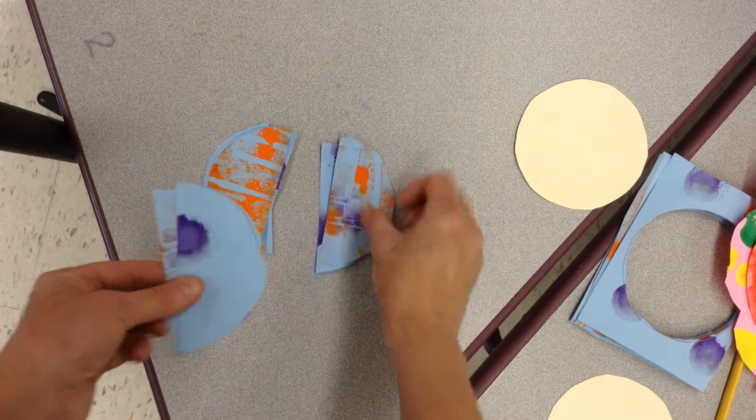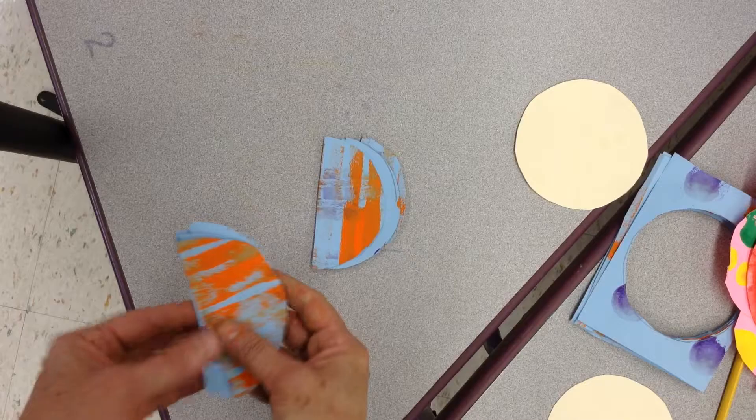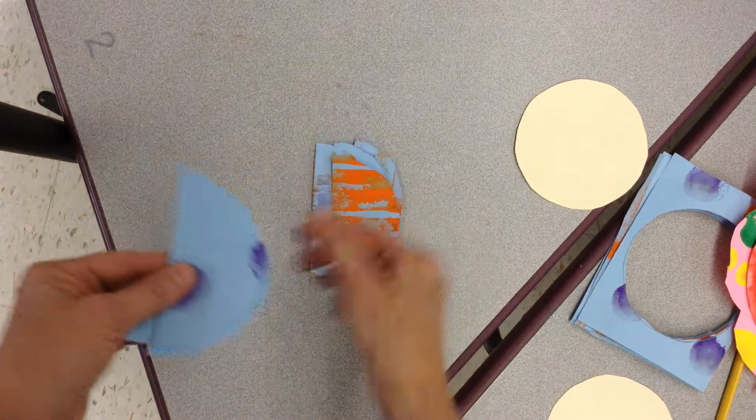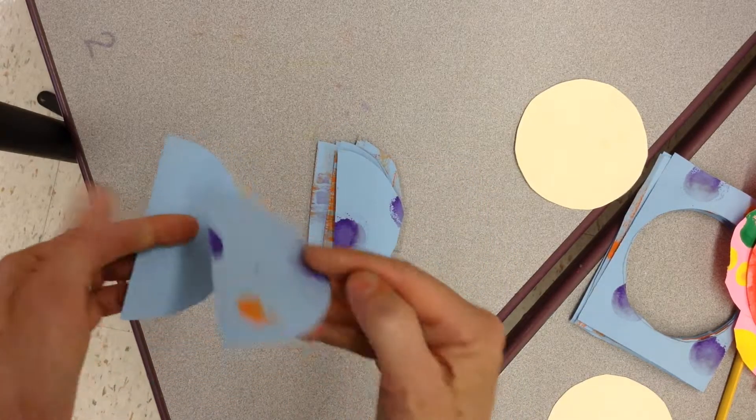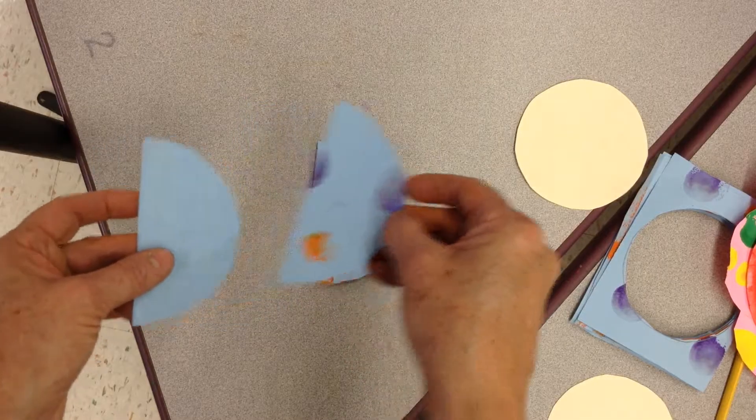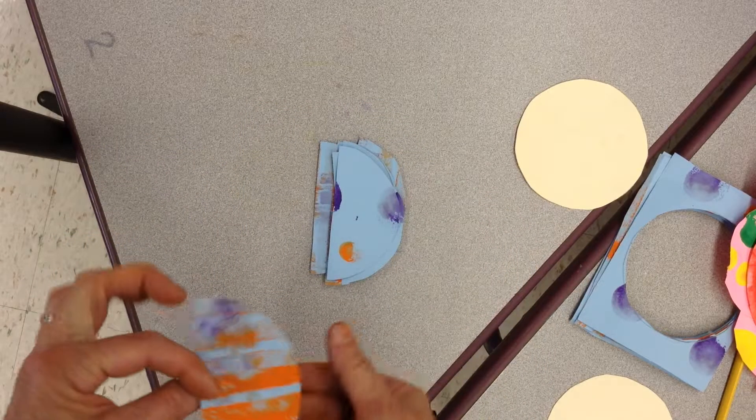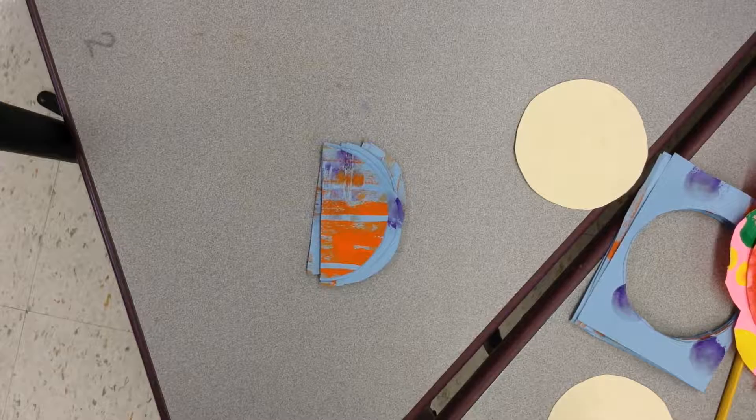One, two, three, four, five, six. And I want to have my painting showing when I glue them down. Seven, eight. You don't have to use all eight petals.